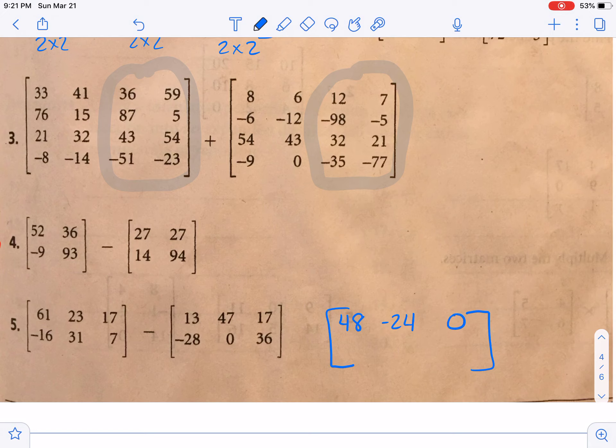Going to the second row, we have a negative sixteen minus a negative twenty-eight. I'm going to write that one down. So minus a negative gives us plus a positive, and so that would give you a positive twelve. Then we have thirty-one minus zero, which is thirty-one. And last but not least, seven minus thirty-six, which would give us a negative twenty-nine.